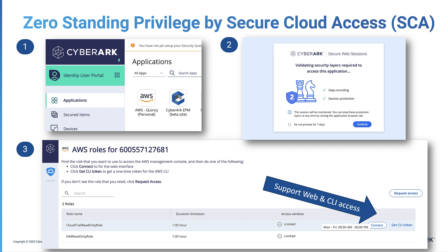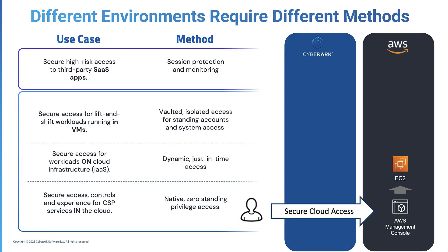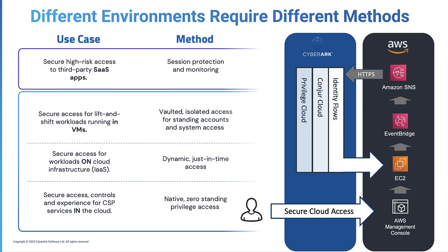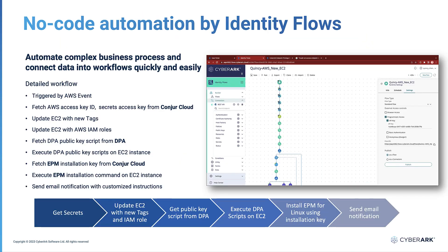After the cloud resource is created, a cloud service provider sends an event-driven alert to the CyberArk Identity Security Platform. In this demonstration, the event sent from AWS EventBridge and SNS as a webhook triggers CyberArk Identity Flows. Identity Flows analyzes the event details and applies updates to the cloud resources and their settings according to the defined automation workflow. After the changes are made, an automated email alert with resource and user-specific instructions is sent.